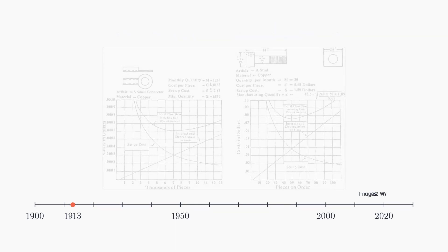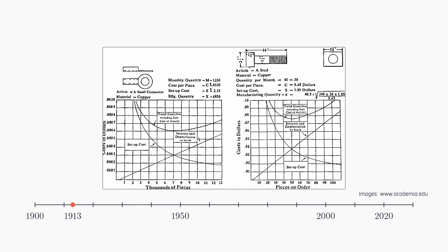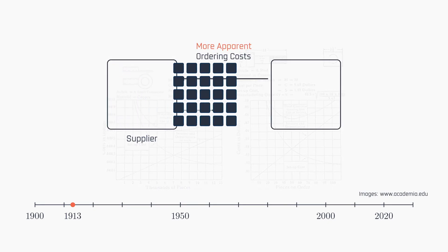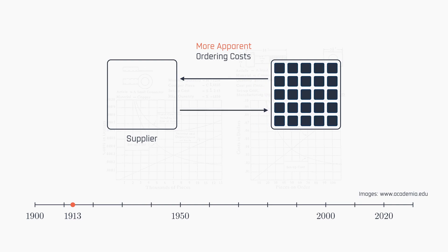His work, rooted in a deep understanding of manufacturing and logistics, highlighted the importance of balancing the more apparent costs of ordering inventory in batches or lots with the more subtle expenses incurred from holding these lots, such as capital interest and depreciation, during their consumption phase.